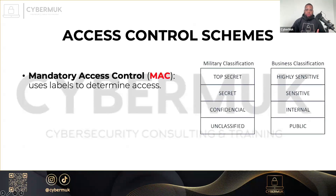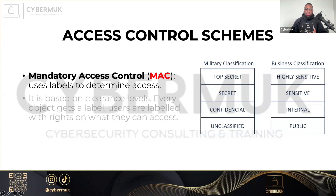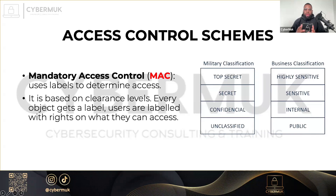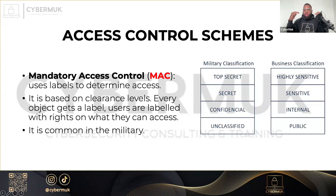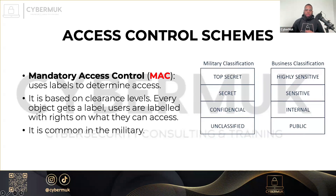Next is mandatory access control, or MAC. Mandatory access control uses labels to determine access. The operating system enforces limits on how much access someone has to an object. It is usually based on clearance levels and is very common in the military. Every object gets a label, and users are labeled with rights on what they can access. You cannot access top-secret data without top-secret clearance, and you cannot access confidential data without at least confidential clearance.